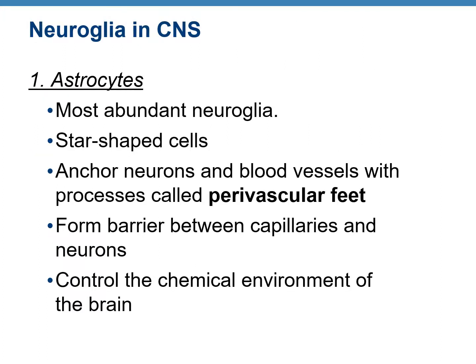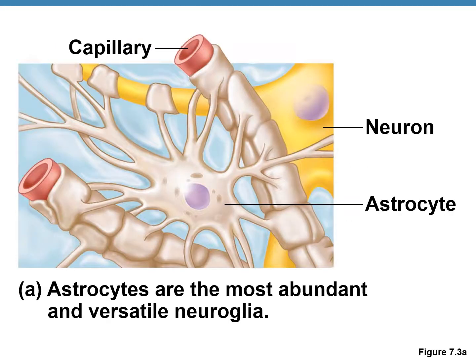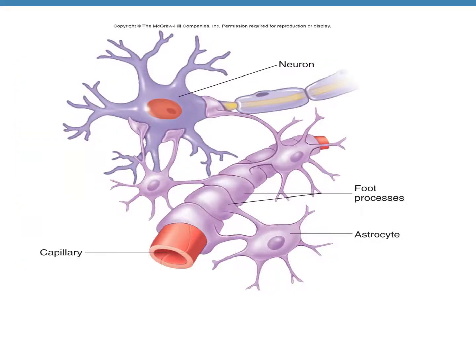There are four types of neuroglia in the CNS. The first is known as astrocytes, the most abundant neuroglia, and they are star-shaped. They have special extensions known as perivascular feet, which grab both neurons and blood vessels, forming physical barriers between blood capillaries and neurons, and in doing so they control the chemical environment of the brain. The figure shows an astrocyte — notice the foot processes, or perivascular feet.